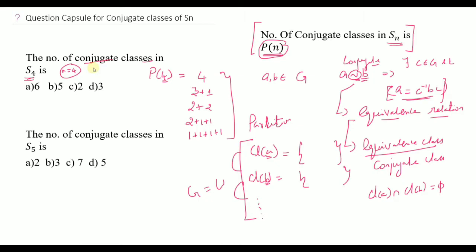So the number of partitions of 4 is 1, 2, 3, 4, and 5. Therefore the answer is 5. The number of conjugate classes in S4 is 5.